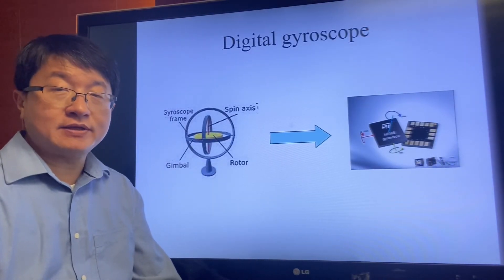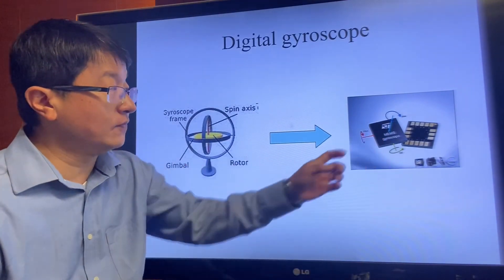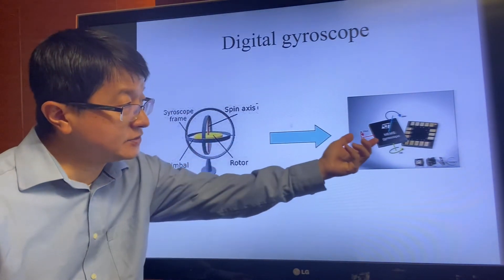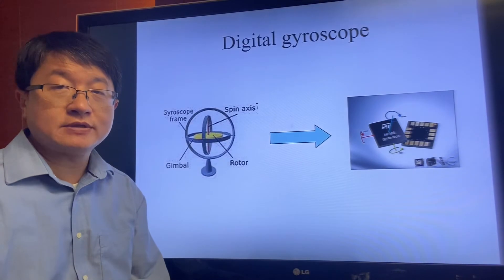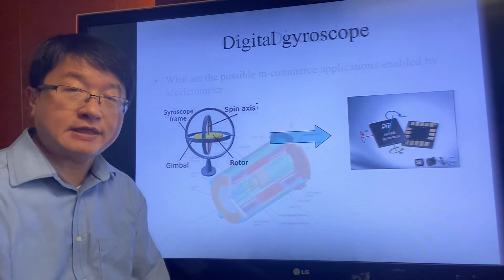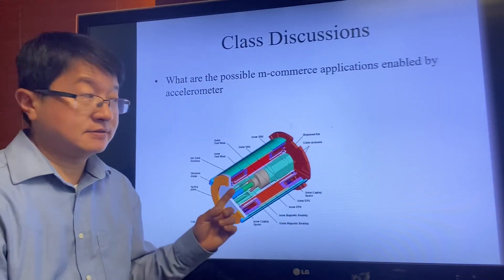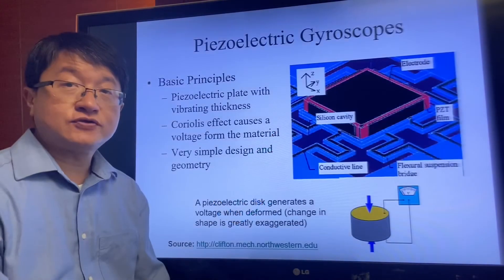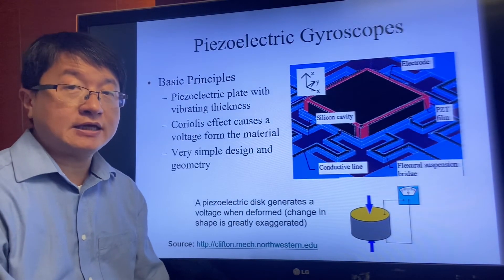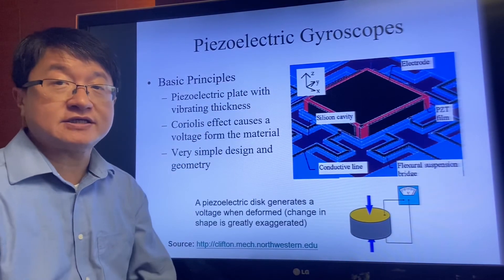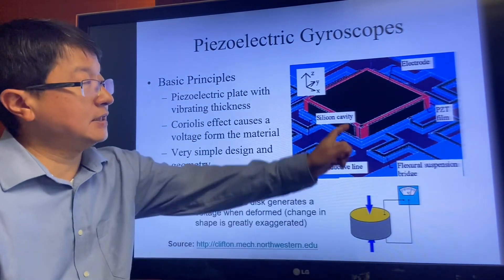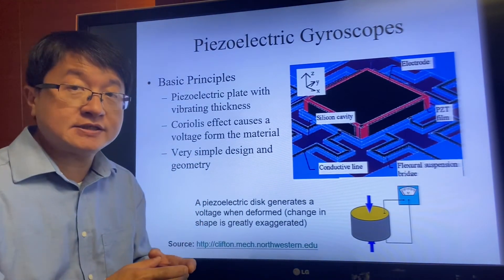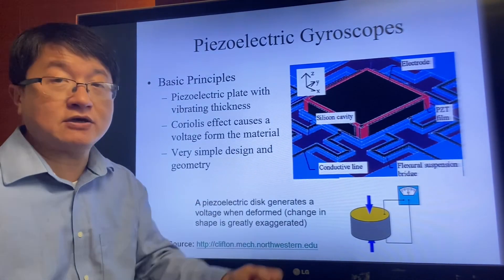How can we implement gyroscope technology in a mobile phone? Such a big rotating flywheel cannot be installed in a small IC chip. Thanks to micro-electronic technology, we can now use the piezoelectric effect to implement gyroscopes at IC scale, putting the gyroscope and pressure sensor all into a tiny IC chip.